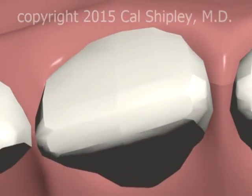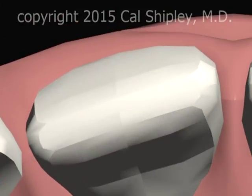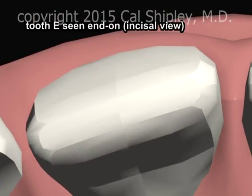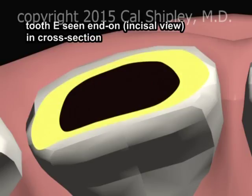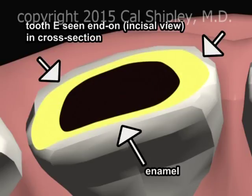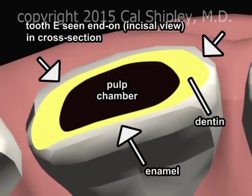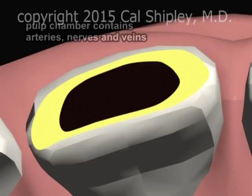Rotating our view to an end-on perspective, also known as an incisal view, in cross-section, we again see the relationships of enamel, dentin, and the pulp chamber containing arteries, nerves, and veins.